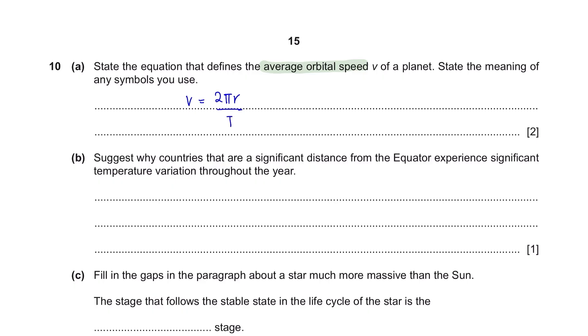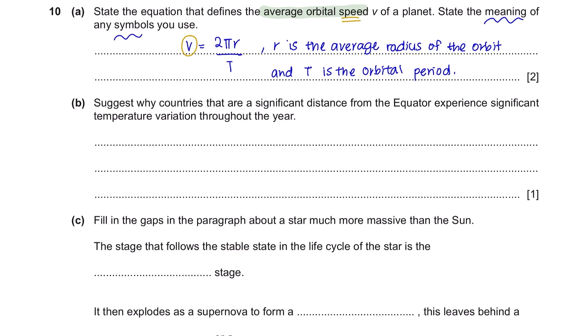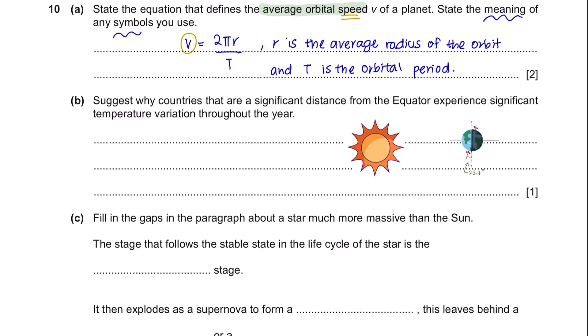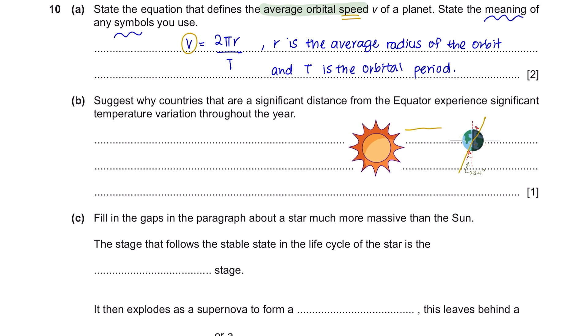They want you to state the meaning of any symbols used. V has already been stated here for you which is the orbital speed. So what's left for you to define is R and T. R is the average radius of the orbit in meters and T is the orbital period in seconds. Question B: Suggest why countries that are significant distance from the equator experience significant temperature variation throughout the year. This happens due to the tilt of the Earth's axis resulting in the sun striking the countries at a different angle throughout the year.